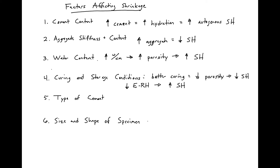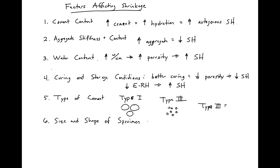The type of cement is also going to affect shrinkage. If we have Type 1 cement, we'll have a larger grain size than Type 3. What that means is that in Type 3 cement, the cement is going to hydrate quicker and more completely than in Type 1, so Type 3 is going to have a higher shrinkage.